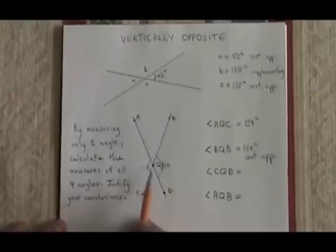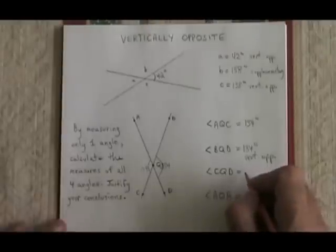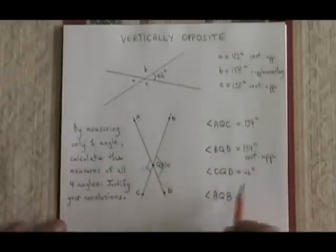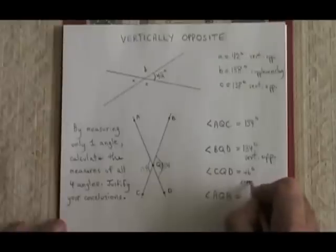Angle CQD is here, and it must be supplementary to angle AQC. They add up to 180 degrees. 180 minus 134 is equal to 46 degrees. So I have found the measure of angle CQD, and I use the word supplementary to justify it.